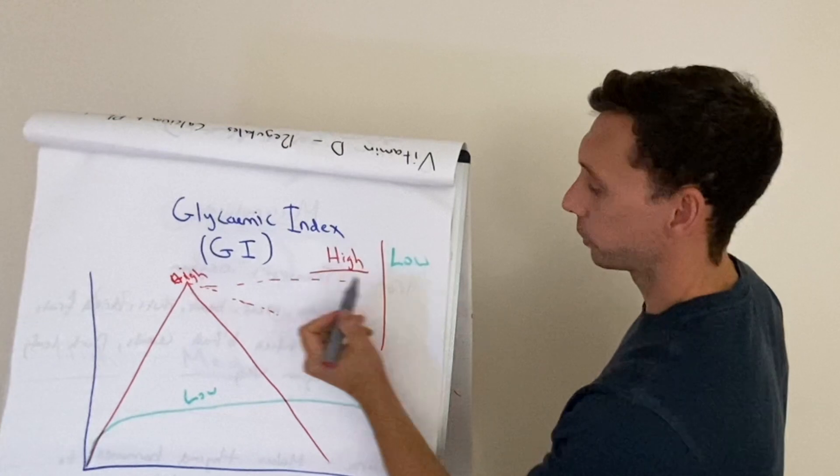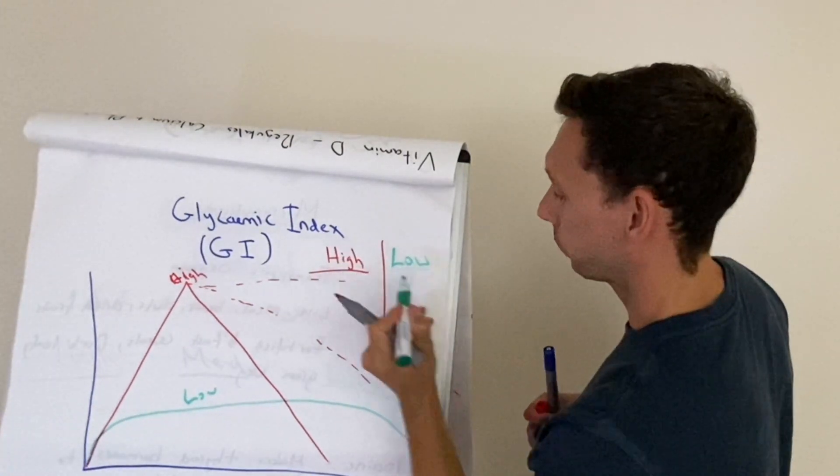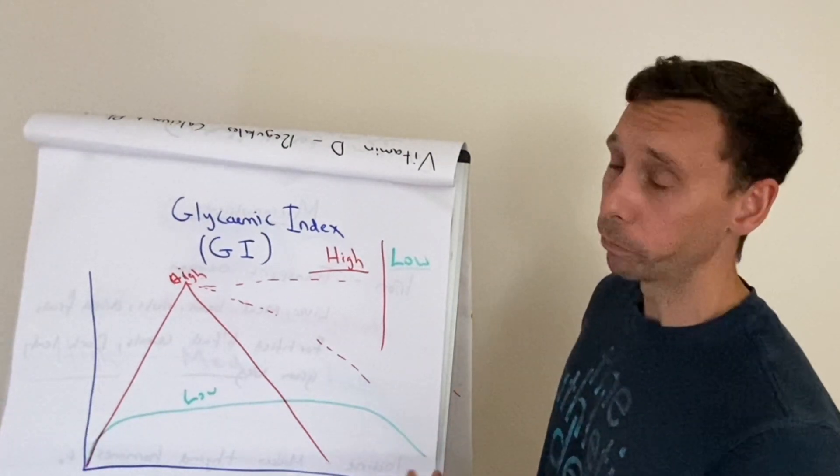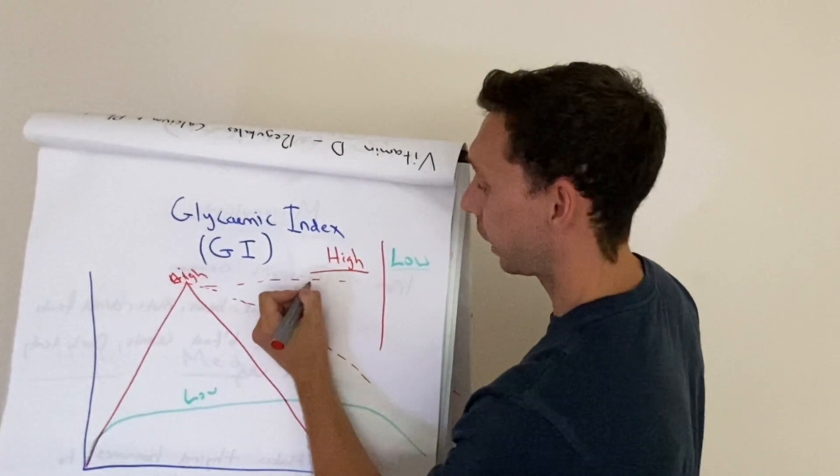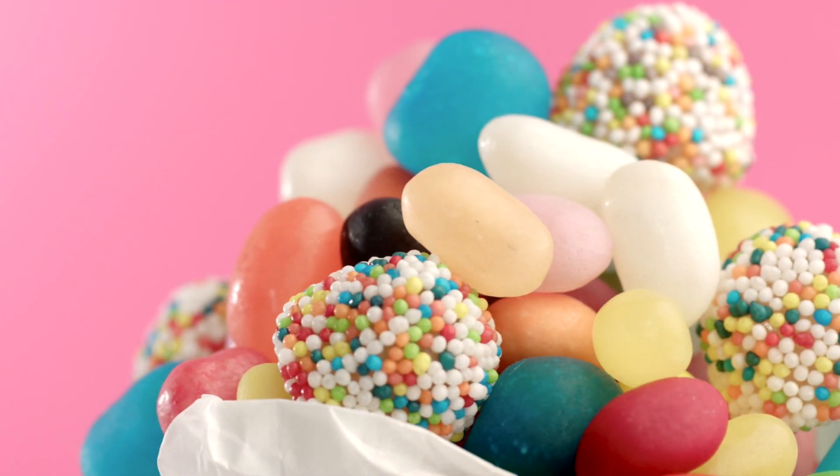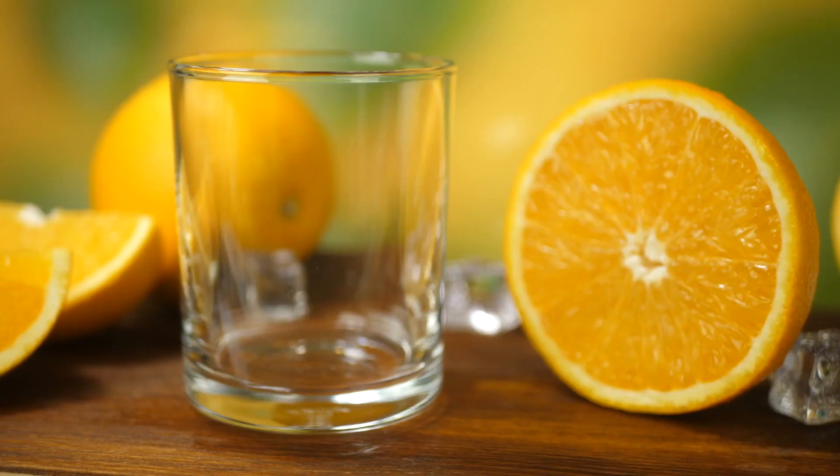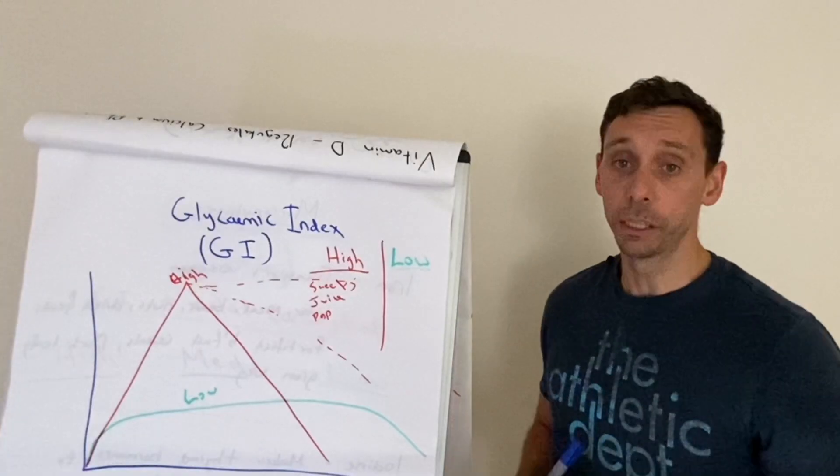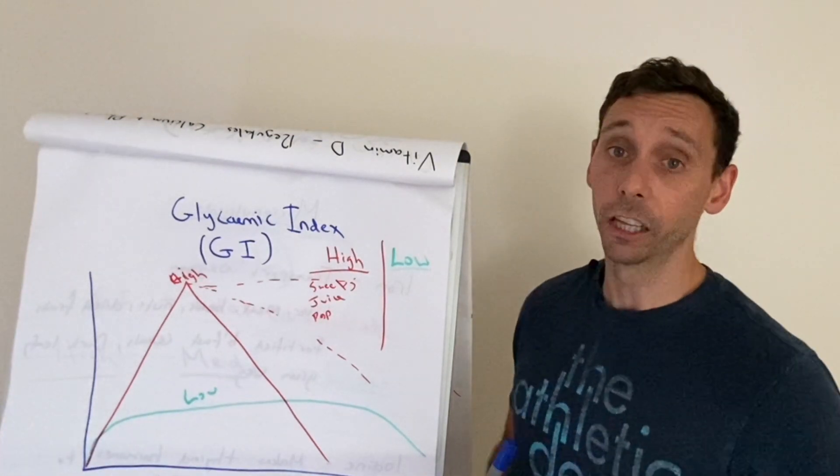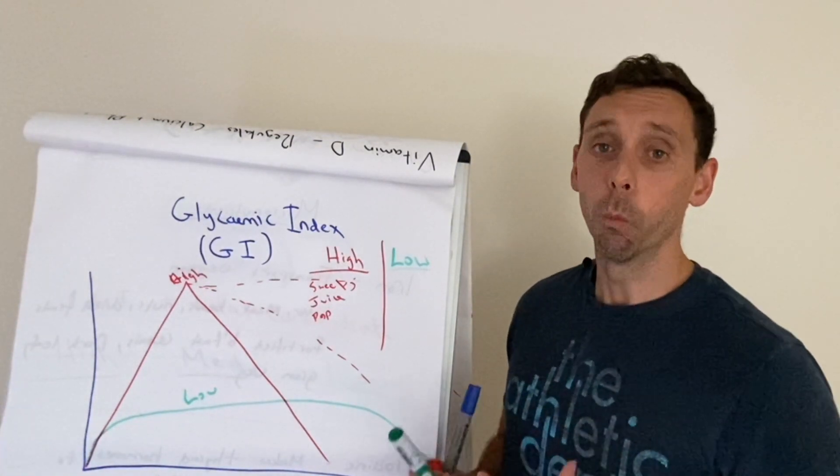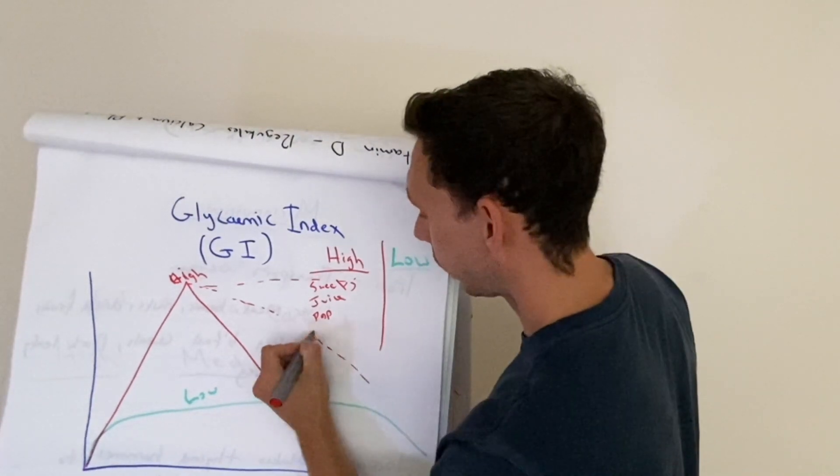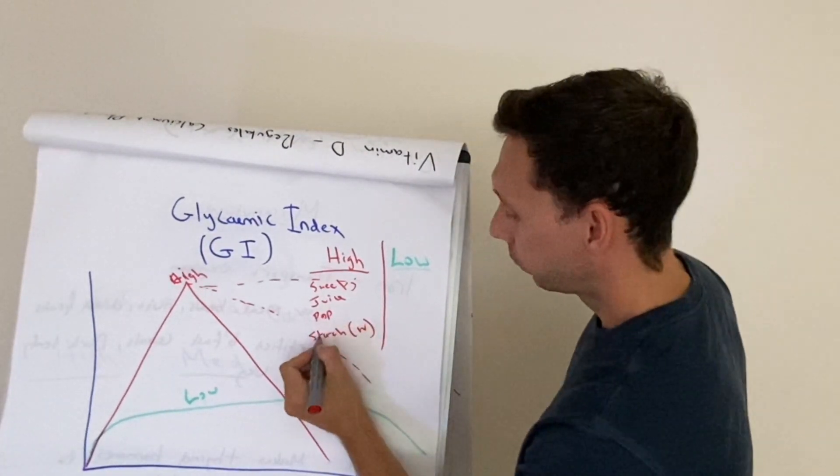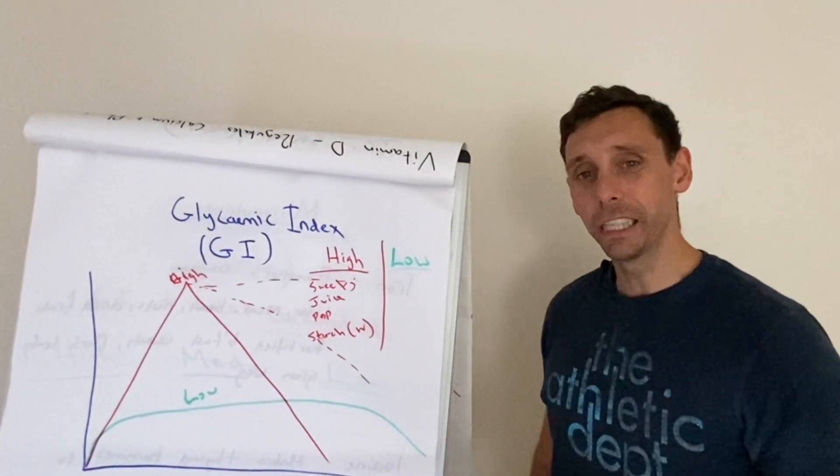Something that is considered high glycemic index will be something very easily absorbed for your body. This will be things like pure sugar like sweets, things like juice and pop drinks. It will also be anything that tends to be highly processed, particularly starchy carbohydrates that are like white flour, white bread, white pasta, white rice. So starch but white starch.